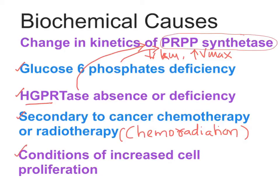Our final cause for hyperuricemia is conditions of increased cell proliferation — such as tumors in cancer or the skin condition psoriasis. In these conditions, increased proliferation of cells is accompanied by death of large numbers of cells. Whenever large numbers of cells die, the nucleic acids containing purines undergo degradation, giving rise to excess uric acid and leading to hyperuricemia. These are all the causes for hyperuricemia that can possibly lead to gout.